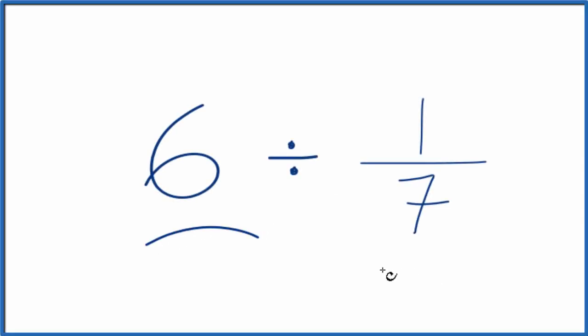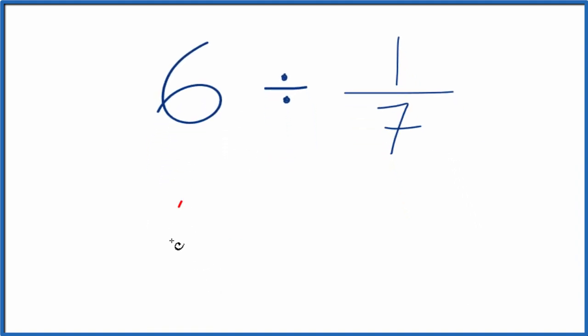Here's how you can divide 6 by 1/7. So first off, let's call 6, 6 over 1. 6 divided by 1, that's still 6, but now we have a fraction.